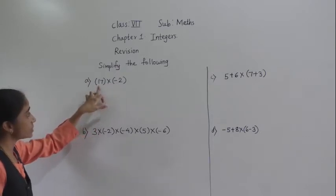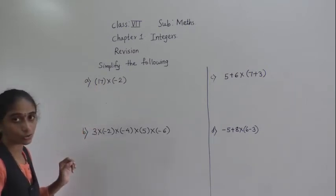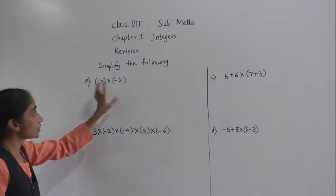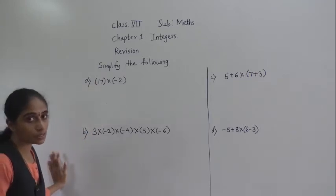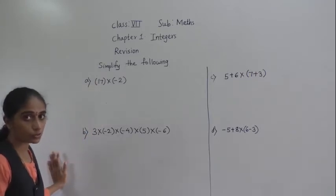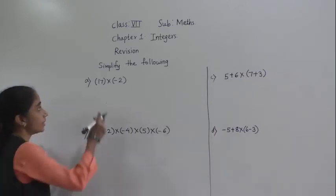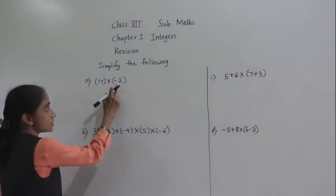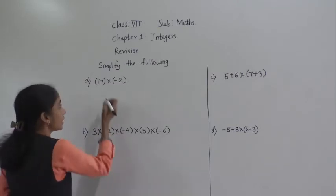See, here one number is positive, another number is negative. So one number is positive, another number is negative, so their product will be negative. This I have already explained you. See, this is positive, this number is negative, so their product will be negative.